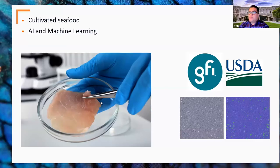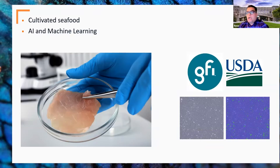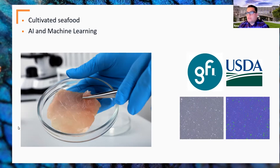The main research topic we are focusing on right now is cultivated seafood. We are using artificial intelligence and machine learning extensively to optimize the cell culture media. We have gotten very interesting results and mathematical predictive models, and we are finalizing and publishing those papers. We have been receiving grants from GFI and USDA, which we should acknowledge.